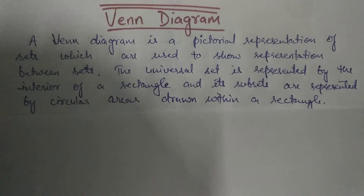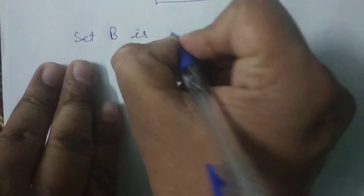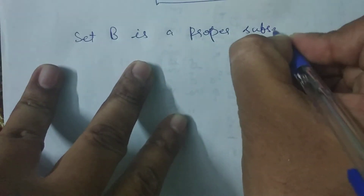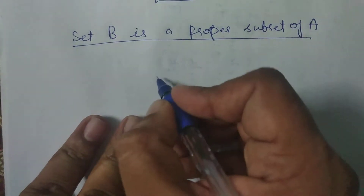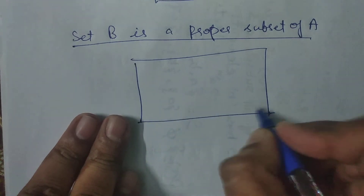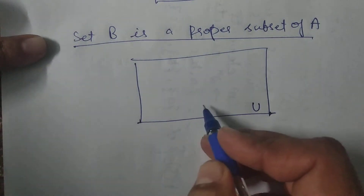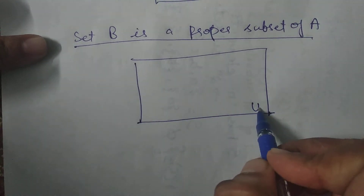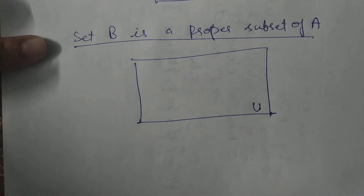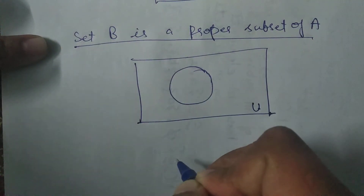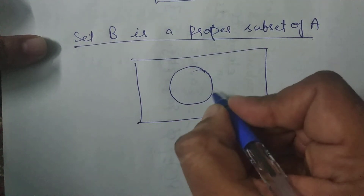Now let us see some examples. Suppose set B is a proper subset of set A. Now how can we represent this using a Venn diagram? First of all, I will draw a rectangle. The region inside this rectangle represents the universal set. Now here I have drawn a circle, and this circular area represents the set A.